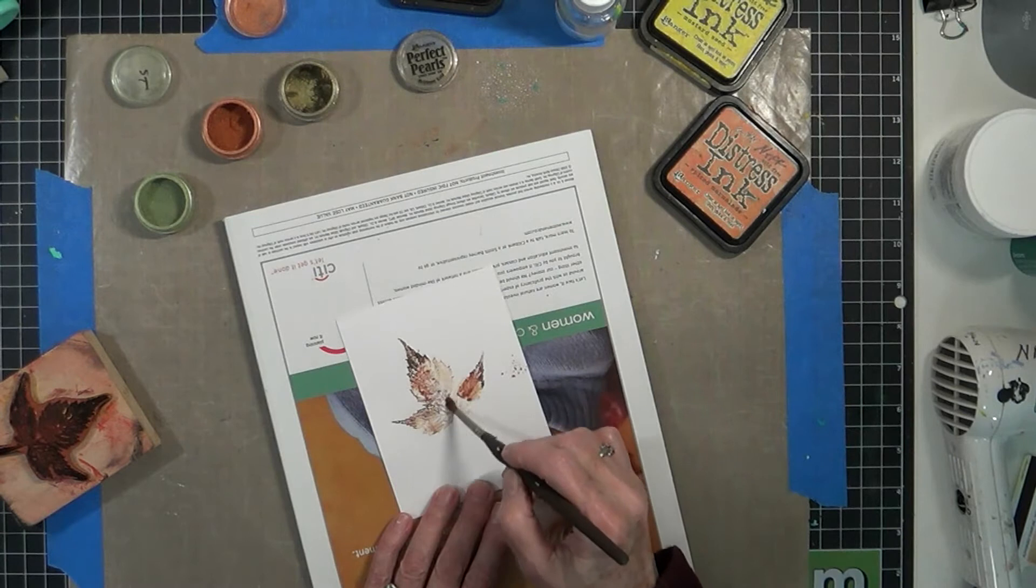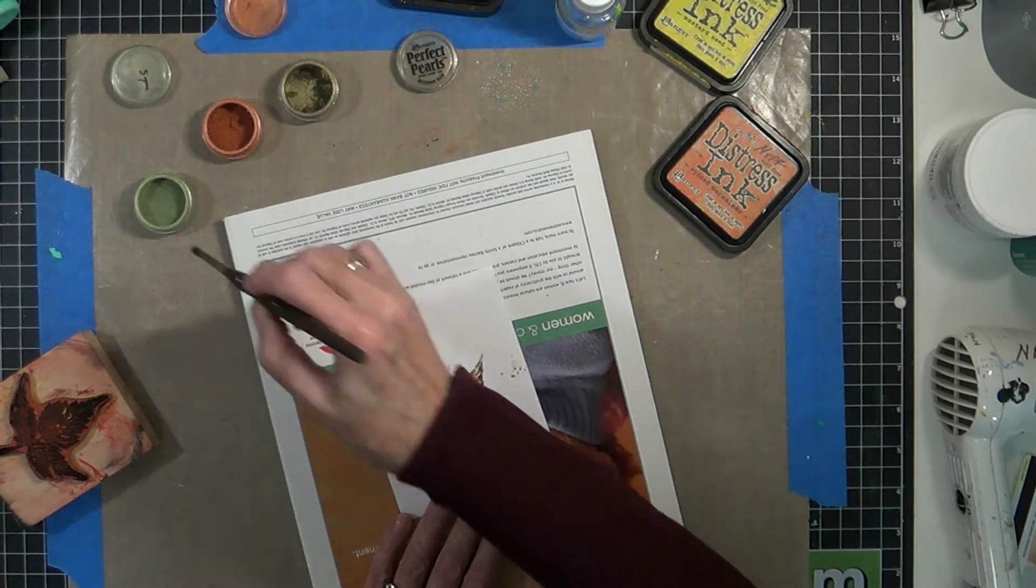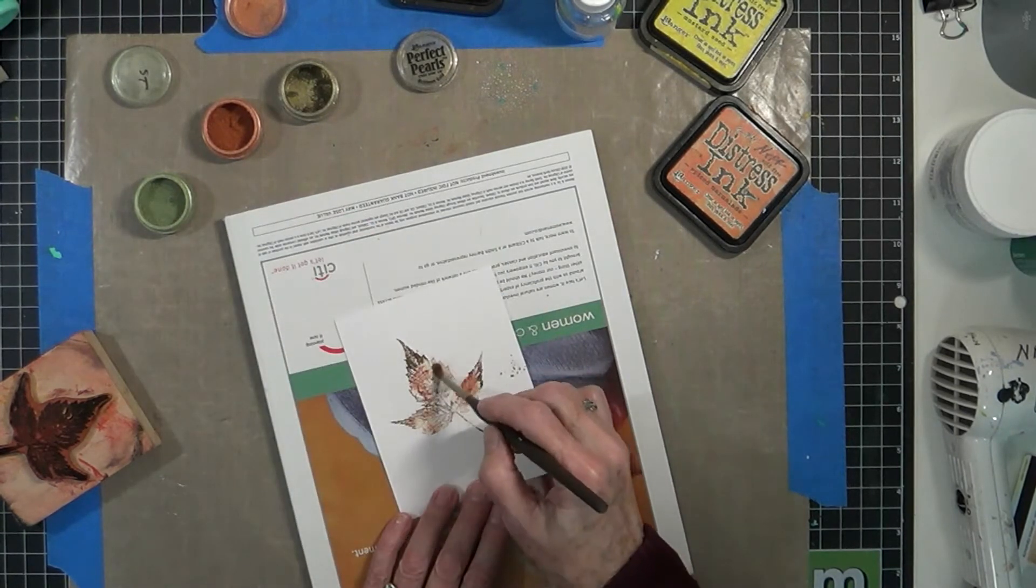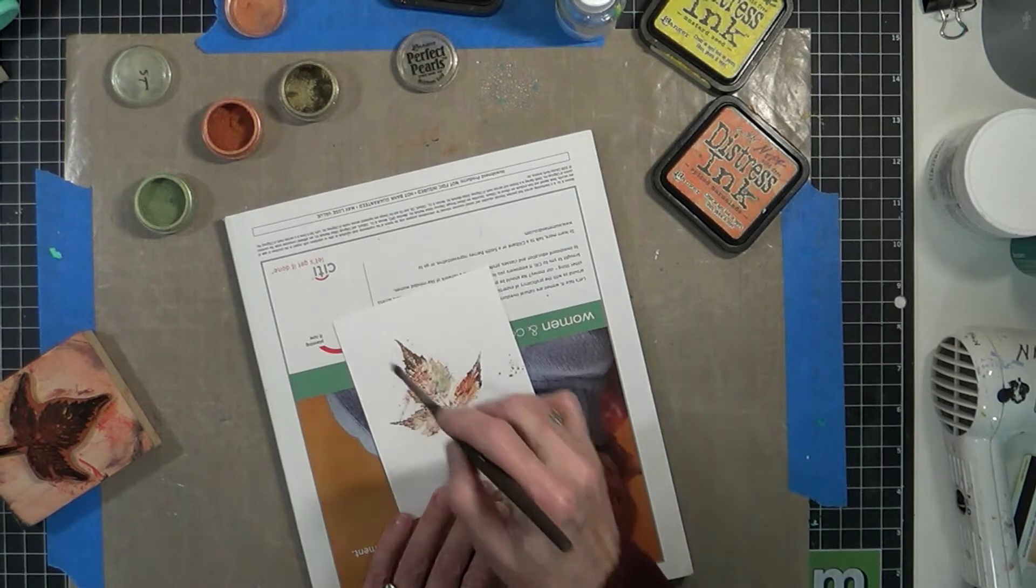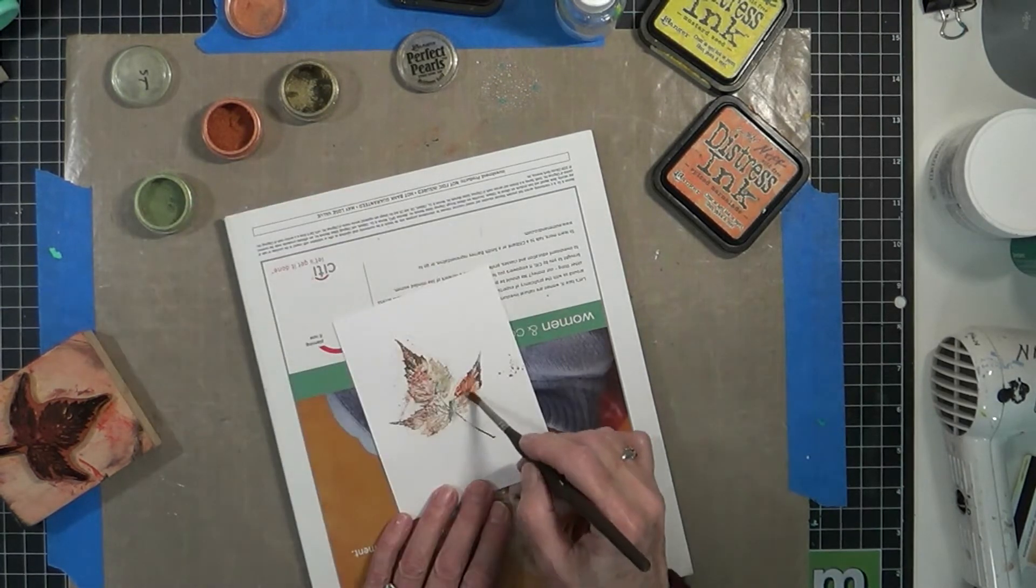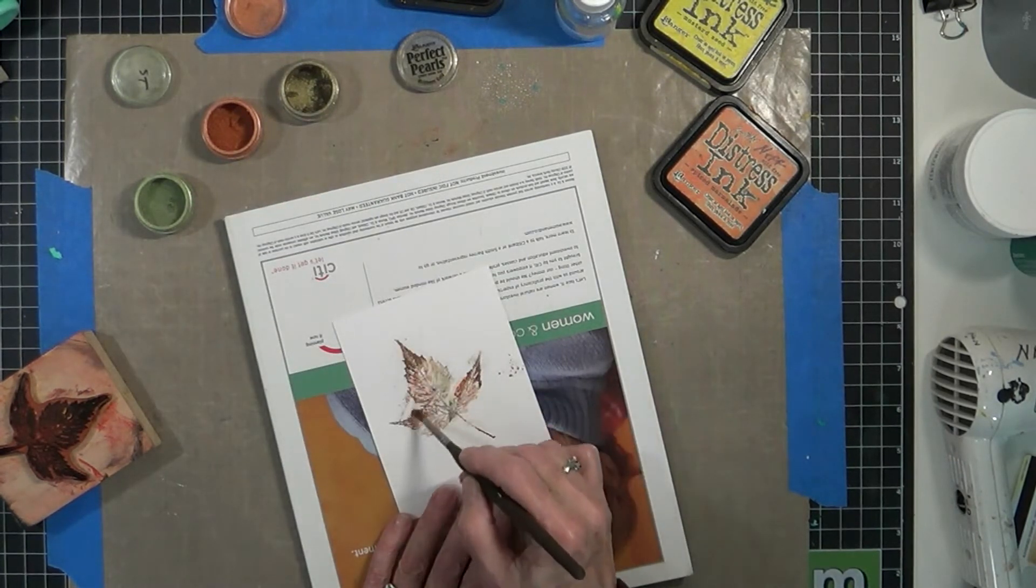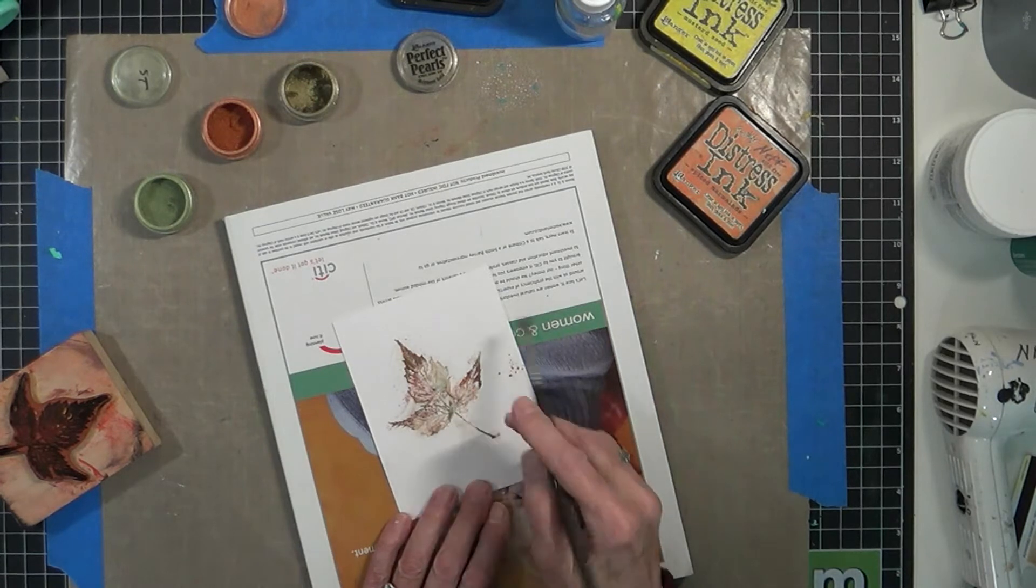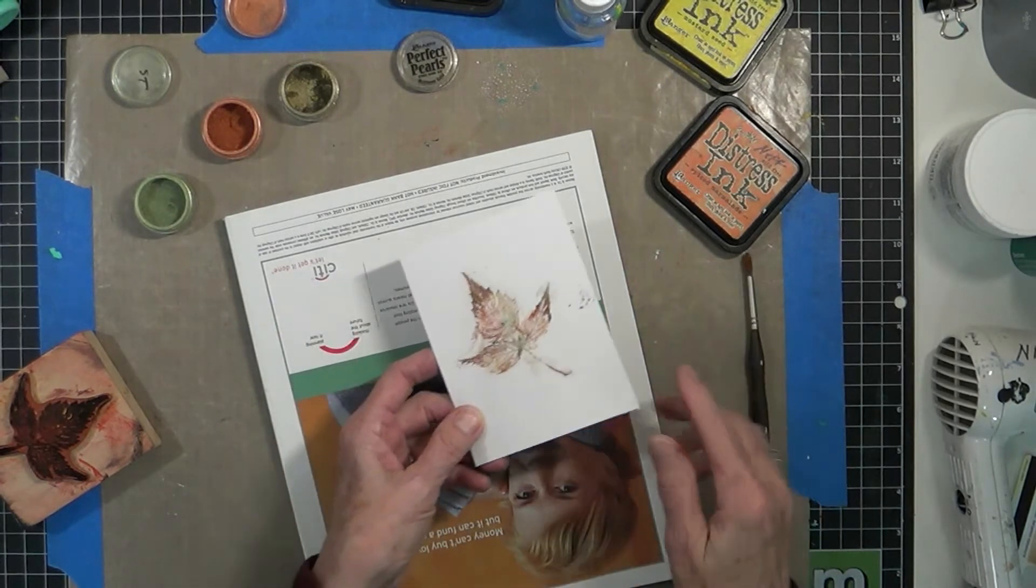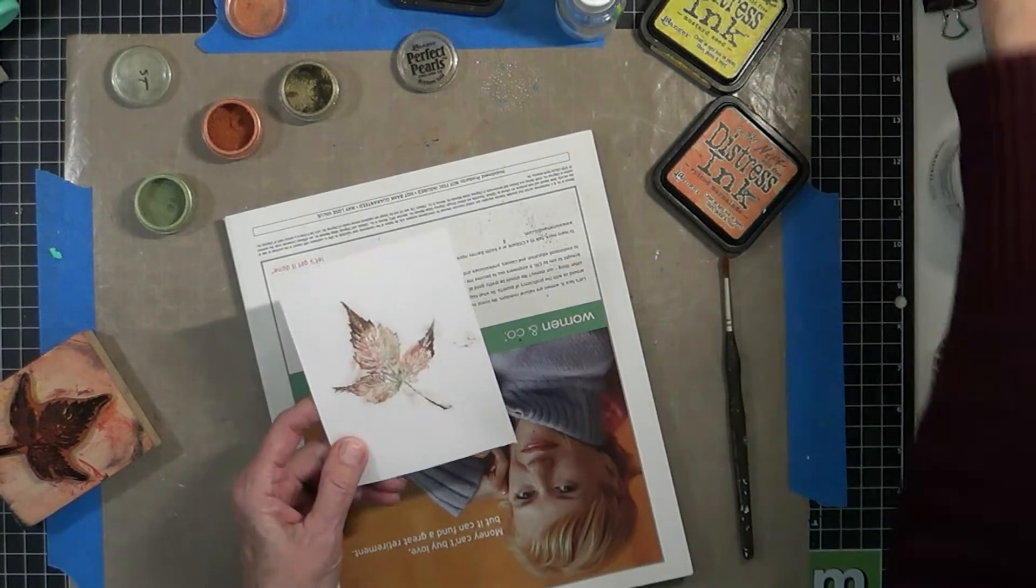I'm adding a rusty color, I think, of gold and a green in the Perfect Pearls. You just want to sort of blend it around and mix it all in because colors on the fall leaves are always mottled and you get a variety of color. So I'm going to tap the excess off.